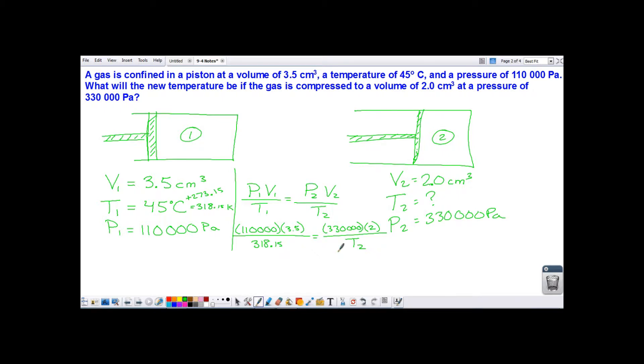I'm going to go ahead and just cross-multiply. So 110,000 times 3 and a half times T2 is 385,000 times temperature 2. And that is going to be equal to, multiply all these. So 318 and 15 hundredths times 330,000 times 2 gets me 209,979,000.